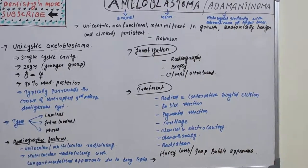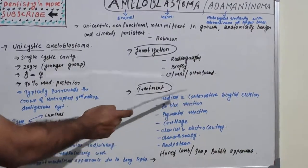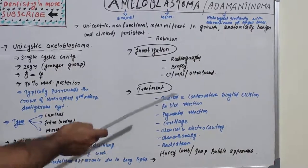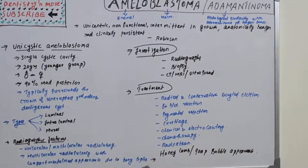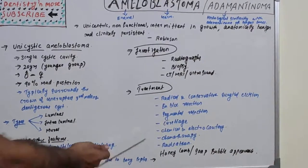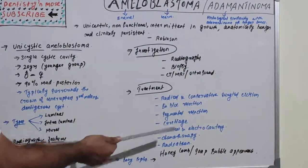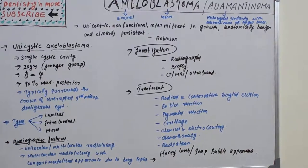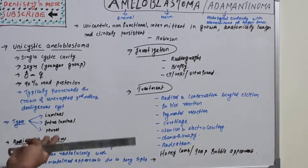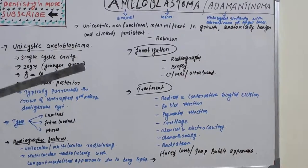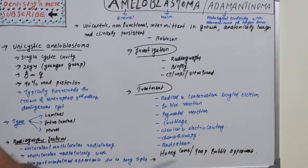Treatment options include radical and conservative surgical excision, en-bloc resection, segmental resection, curettage, chemical and electrocautery, chemotherapy, and radiation. Simple excision or enucleation is used for peripheral ameloblastoma. Enucleation or curettage involves removal of the tumor by scraping it from the surrounding normal tissue.